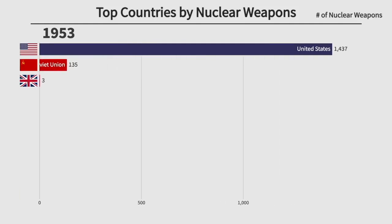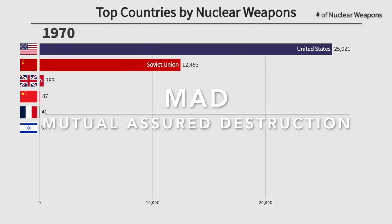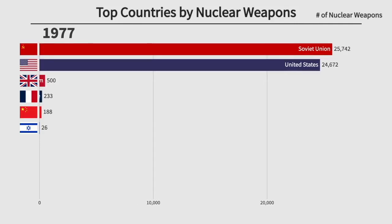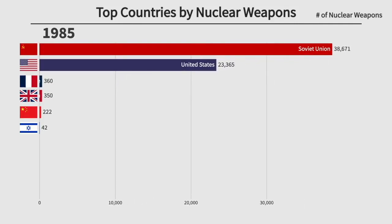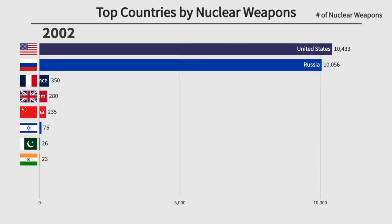This development set off a competitive race between the two nations to expand and improve their nuclear arsenals. Both countries sought to increase their stockpiles, enhance the destructive power of their weapons, and develop advanced delivery systems. The arms race was fueled by the concept of deterrence — the belief that possessing a substantial nuclear arsenal would deter the other side from initiating a nuclear attack. This led to the doctrine of Mutual Assured Destruction, or MAD, which implied that any nuclear attack on either side would result in catastrophic retaliation, essentially deterring both nations from launching an attack.